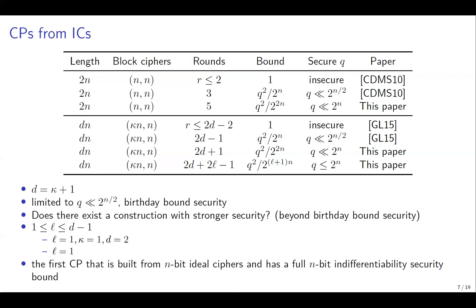As far as we know, our result is the first cryptographic permutation that is built from N-bit ideal ciphers and has a full N-bit indifferentiability security bound.